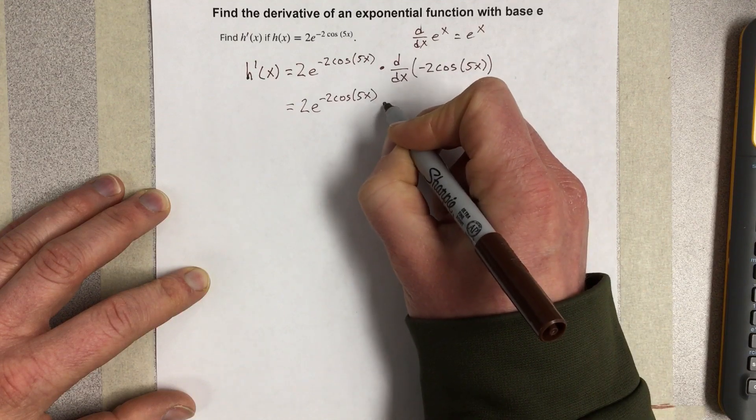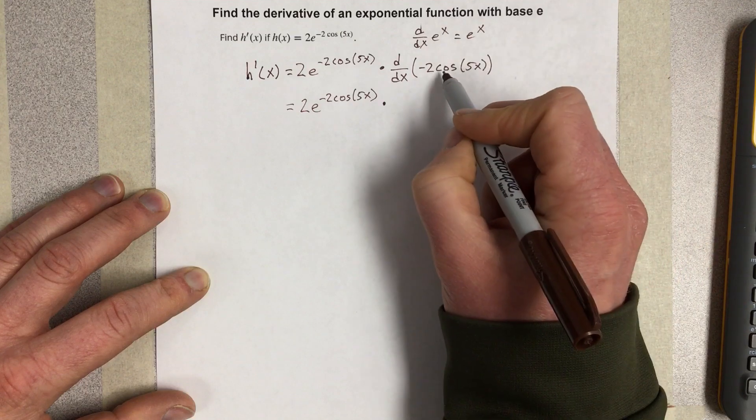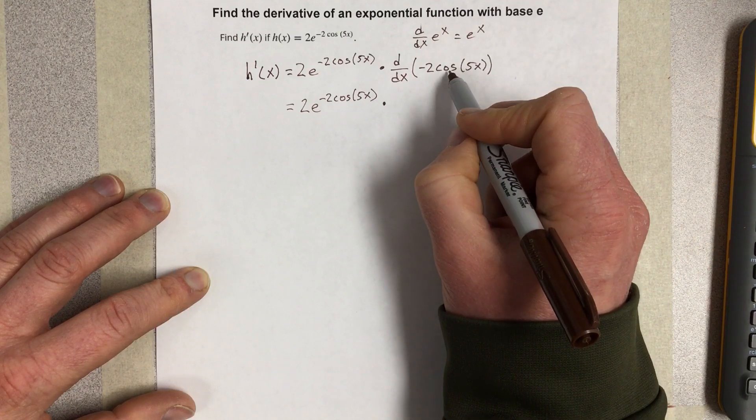So I'm going to have times the derivative of negative cosine. The derivative of cosine is typically negative sine.